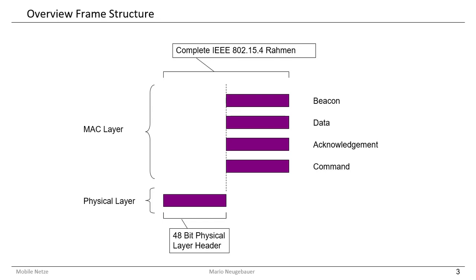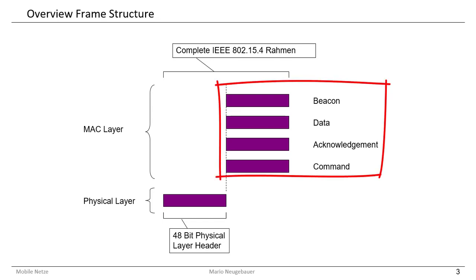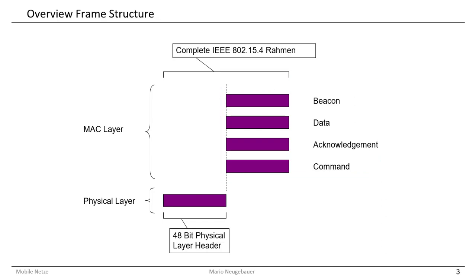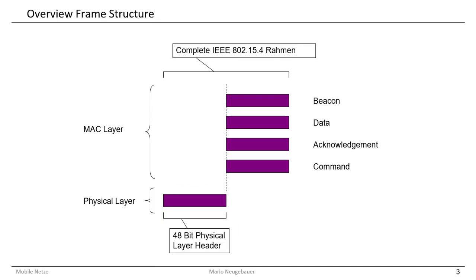The standard 802.15.4 is specified on both the MAC layer and the physical layer. On the MAC layer especially, we have four specialized messages which are specified. In the physical layer there is also a part of 48 bits which is required to work on the physical layer in the 802.15.4 network.